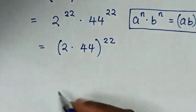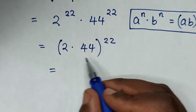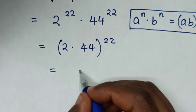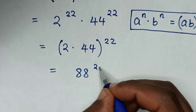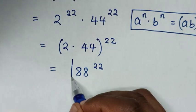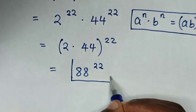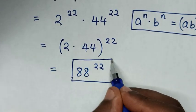It will be equal to 2 times 44 is 88, power of 22. So 88 power of 22 is our final answer.